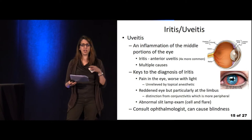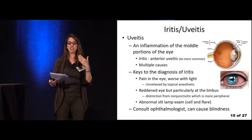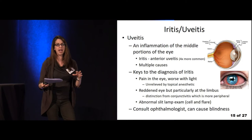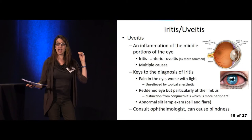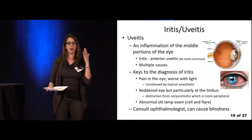Now uveitis and iritis. The uvea is made up of the choroid, the ciliary body, and the iris. The iris is the anterior part, which is why iritis is also referred to as anterior uveitis. A key thing to distinguish iritis: if you put topical anesthetic on the eye and it does not take away the pain, that's useful — it suggests the issue is deeper, not corneal.